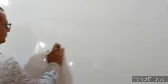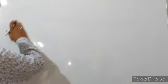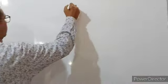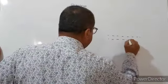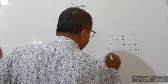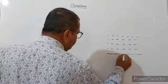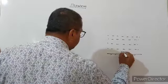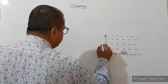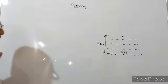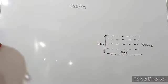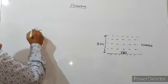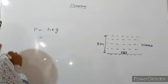On the basis of this concept we can think about numerical problems. Suppose there is a static liquid in a container. This is the lower surface, and here one body is kept. This is the height of the liquid column — this height is 8 meters. This is water. So we can find the pressure at this position.